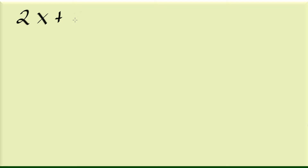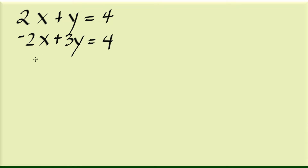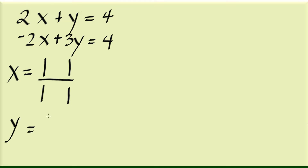Let's write down the equations: 2x plus y is equal to 4, and the second equation is negative 2x plus 3y is equal to 4. To find x, we're going to be using this format here. There's this determinant terminology — what this numerator is about. This is a determinant but looks like a pair of vertical lines. That's the formula we're going to be using for both x and y.